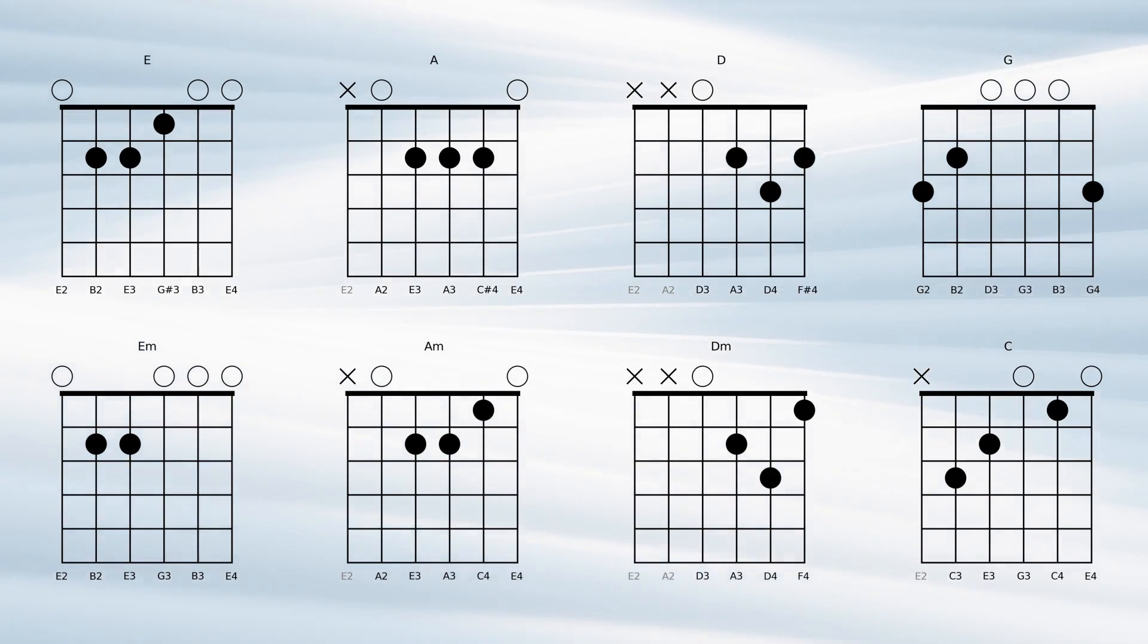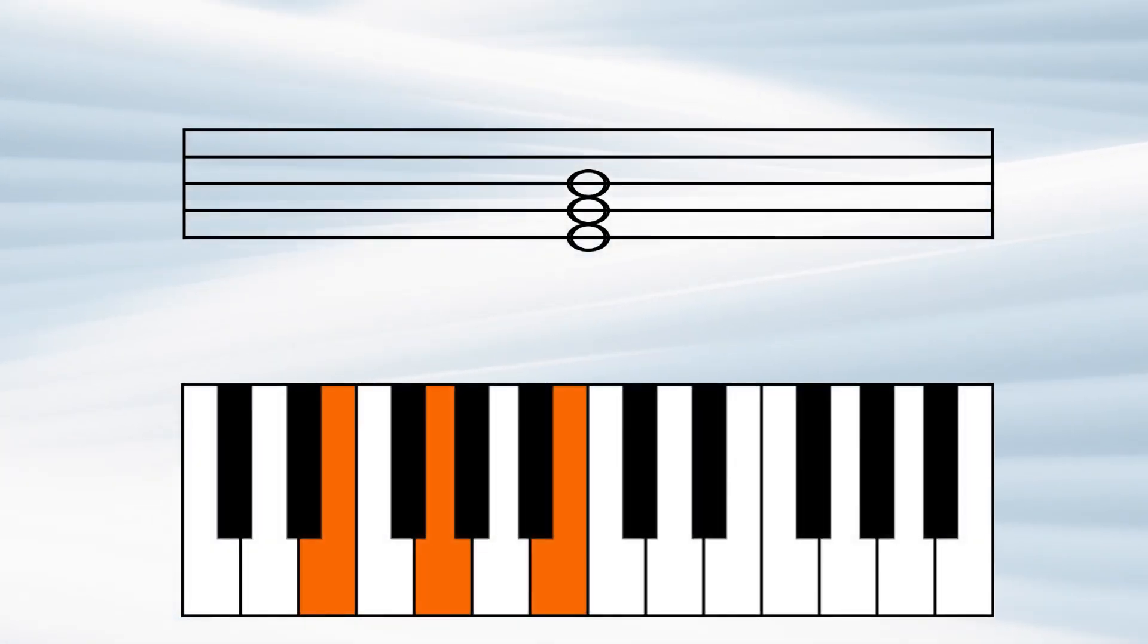See, a chord is a collection of notes. Major and minor chords are some of the most common ones. They are triads, meaning they consist of three notes, and they are tertian, meaning they are constructed of thirds.